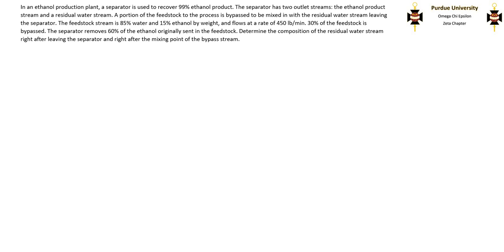30% of the feedstock is bypassed. The separator removes 60% of the ethanol originally in the feedstock. Determine the composition of the residual water stream right after leaving the separator and right after the mixing point of the bypass stream.